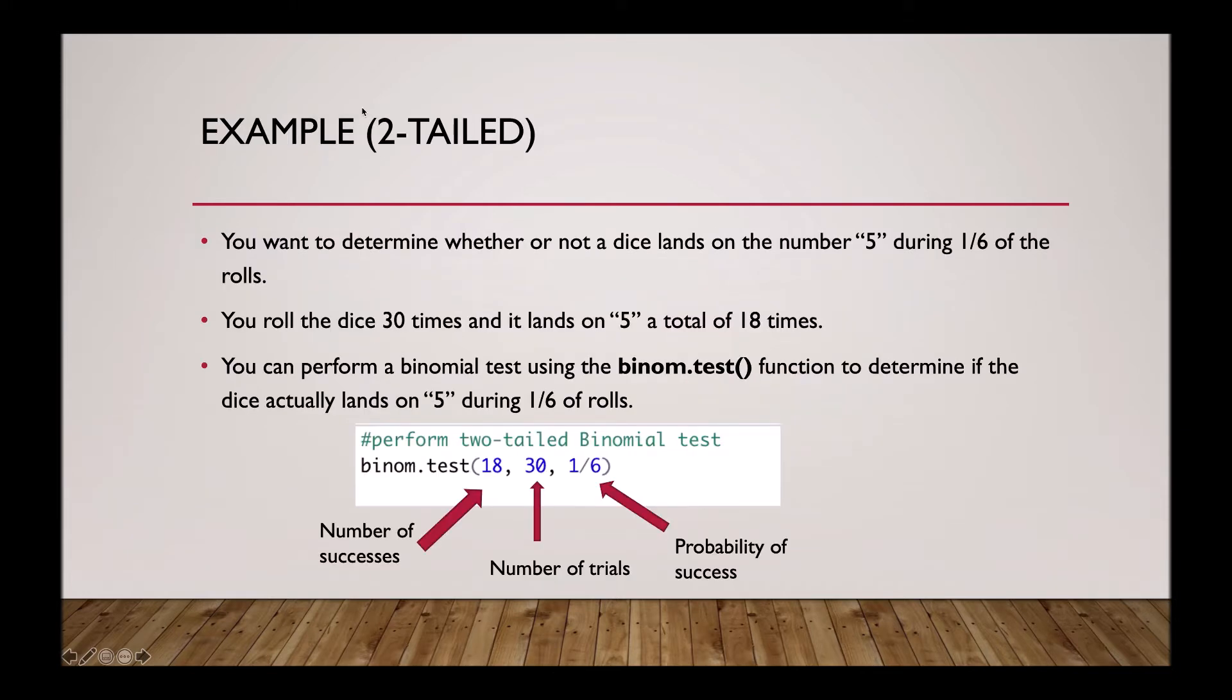An example of a two-tailed test is when you want to determine whether or not a dice lands on the number 5 during one out of six rolls. You roll the dice 30 times and it lands on a 5 a total of 18 times.